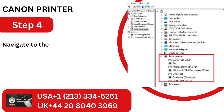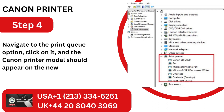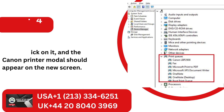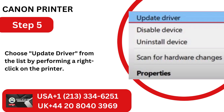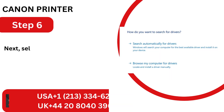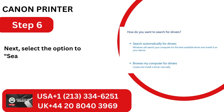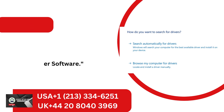Step 4: Navigate to the Print Queue option, click on it, and the Canon Printer model should appear on the new screen. Step 5: Choose Update Driver from the list by performing a right-click on the printer. Step 6: Next, select the option to search automatically for Updated Driver Software.